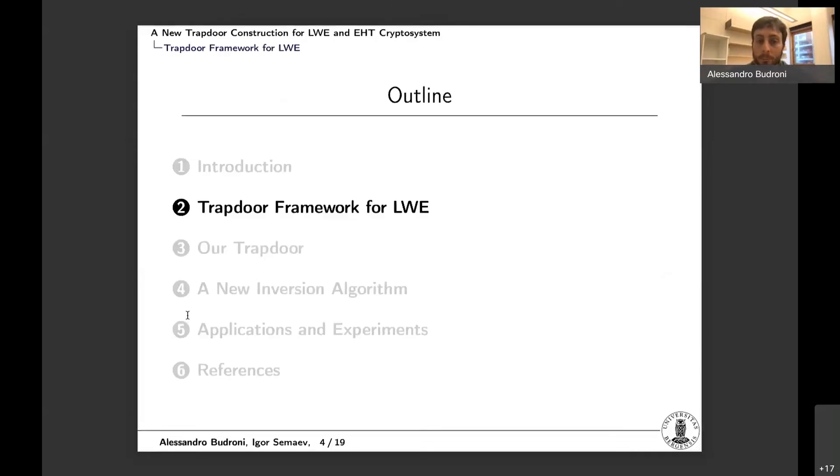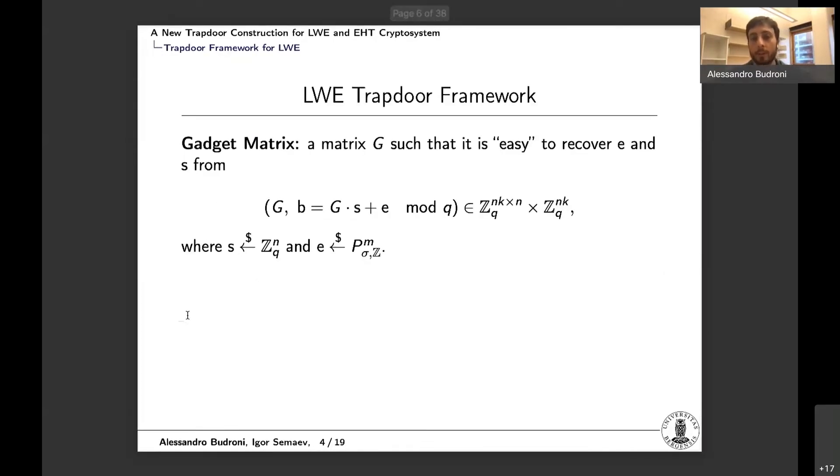So now I'm going to introduce a framework, a very general framework for trapdoors on LWE. So first I have to talk about the concept of gadget matrix. A gadget matrix is a matrix G such that an LWE problem defined on the matrix, that uses G as a public matrix, is easy to solve. In other words, there exists a polynomial time algorithm that allows to recover the secret and the error.